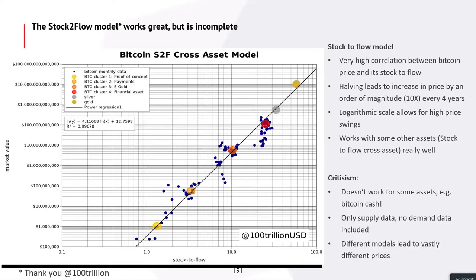There's also some criticism. It doesn't work for all assets — for example, Bitcoin Cash, which I'll revisit in a second. Another criticism is that only supply data is used; demand is not included in the model. And then there are several stock-to-flow models that all work great but come up with very different prices.